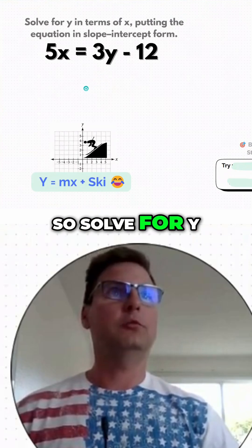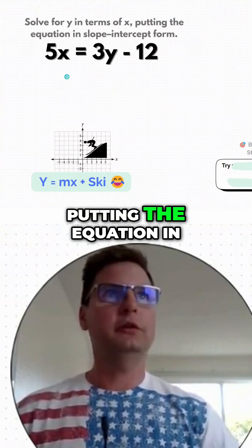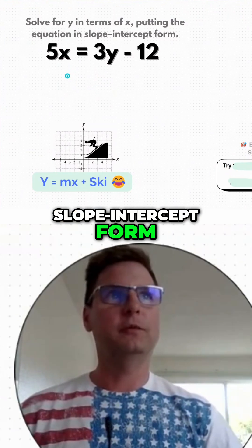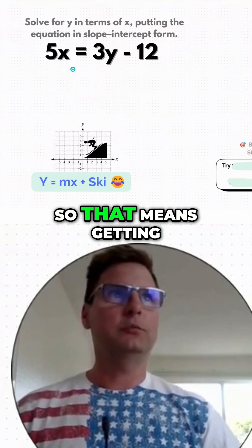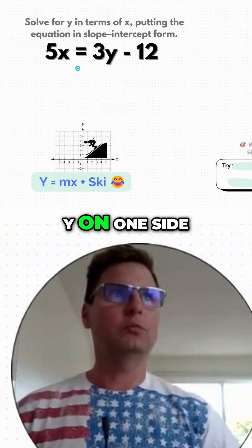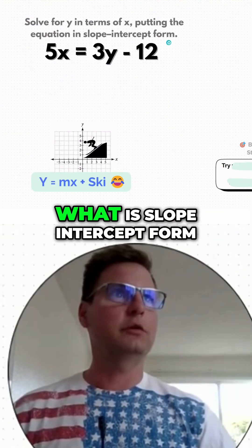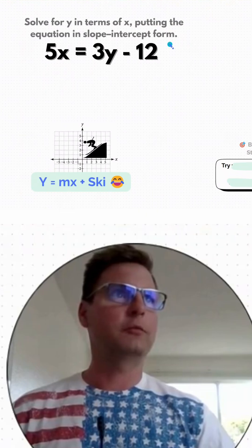Alright, so solve for y in terms of x, putting the equation in slope-intercept form. Okay, so that means getting y on one side.